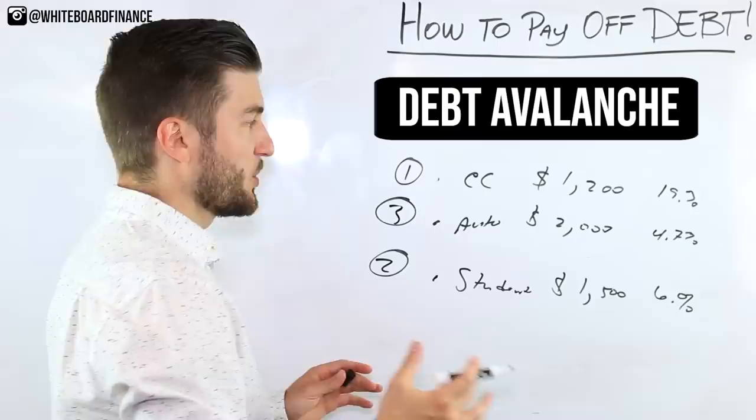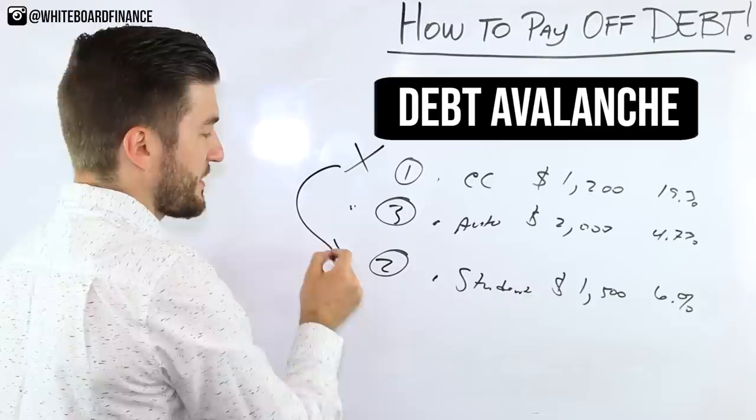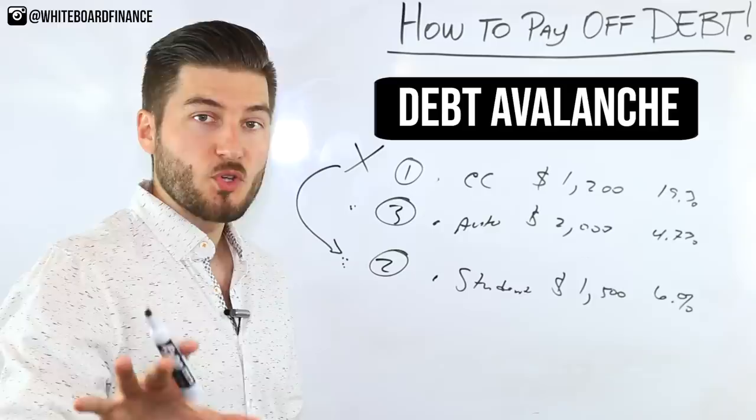So what you would do is use the same technique: you maintain minimum payments on the second and third debt, or however many debts you have, while you try and absolutely crush this first one. Then you move on to the one with the second highest interest. In this example it comes out to be the same, but I'll actually show you how much money you can save in a hypothetical scenario using the debt avalanche in this Excel spreadsheet.